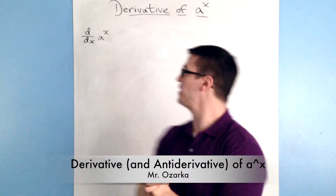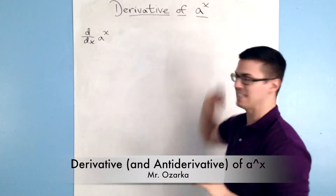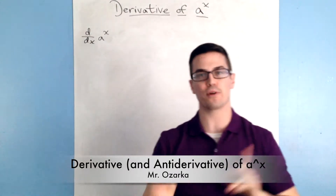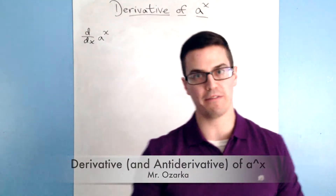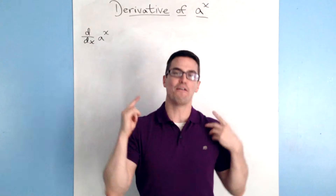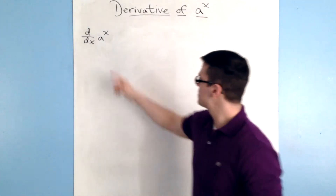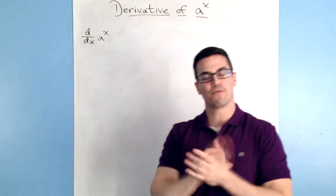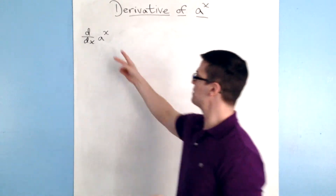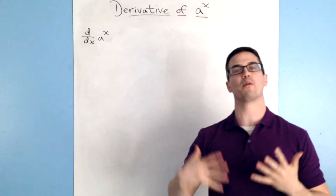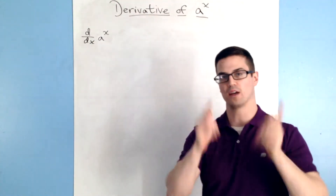Alright, so this is going to be a video about the derivative of a to the x, and it's going to be directly related to the previous video where I found the derivative and anti-derivative of e to the x. So this time it's going to be a to the x, and the first thing we're going to want to do is simplify this — we want it in terms of e to the x.